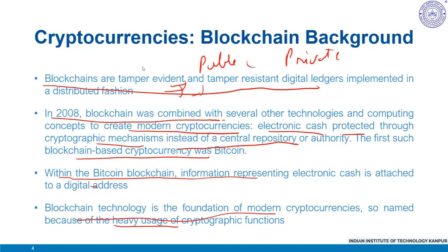To summarize: in Bitcoin and similar systems, the transfer of digital information representing electronic cash takes place in a distributed system. Bitcoin users can digitally sign and transfer their rights to that information to another user, and the Bitcoin blockchain records this transfer publicly, allowing all participants to independently verify the validity of transactions. Blockchain technology has thus enabled the development of many cryptocurrency systems such as Bitcoin and Ethereum.